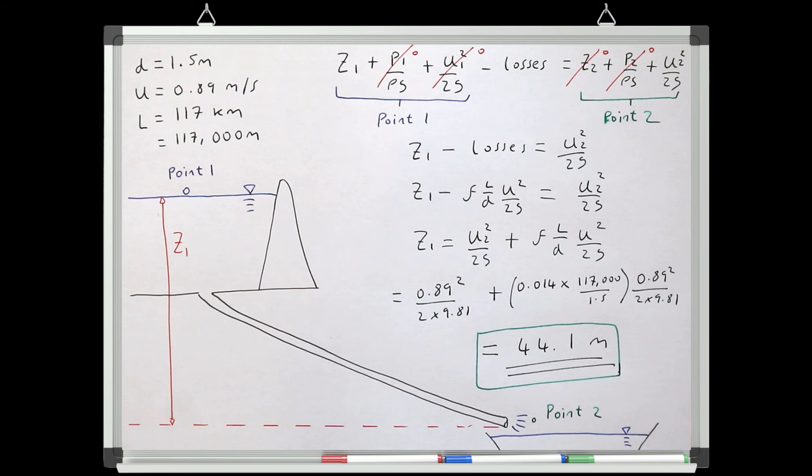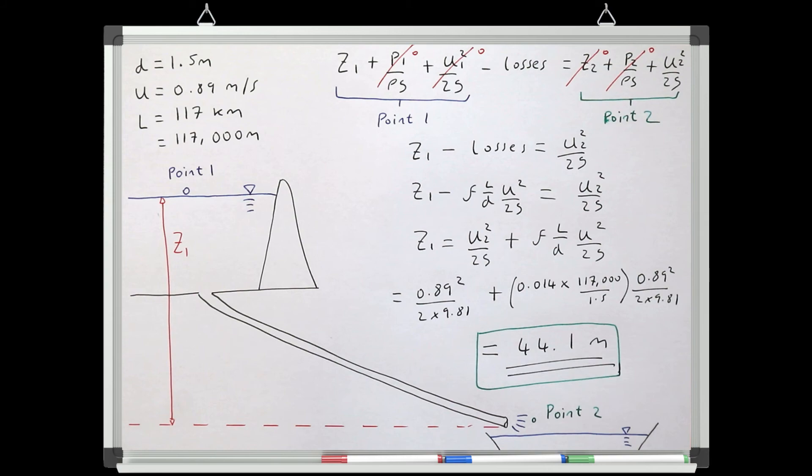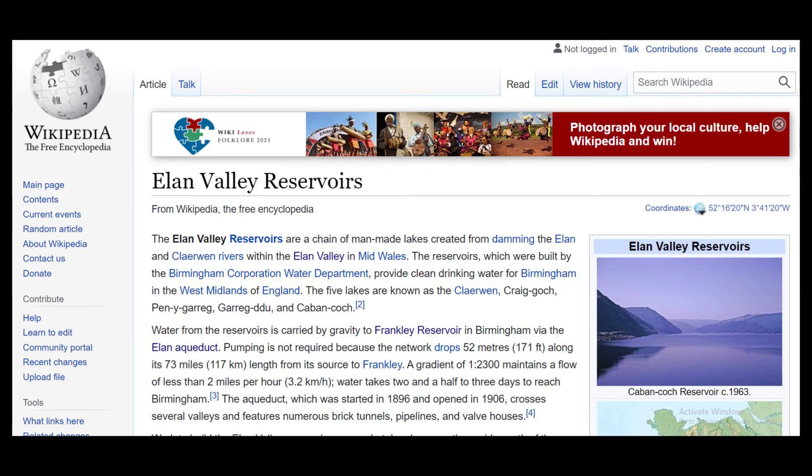So the question is, how accurate is this prediction? If we have a quick look at the Wikipedia page for this system, we can see that the difference in elevation between the reservoir and the outlet is actually 52 meters.